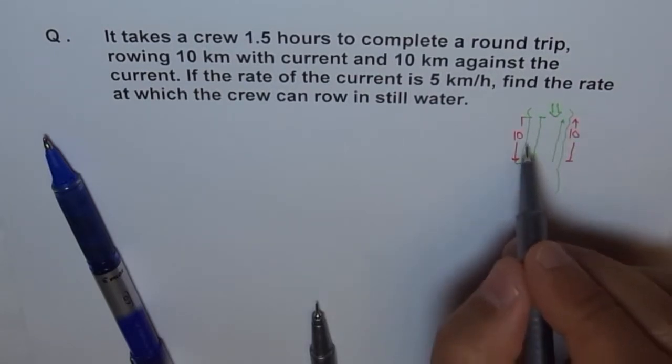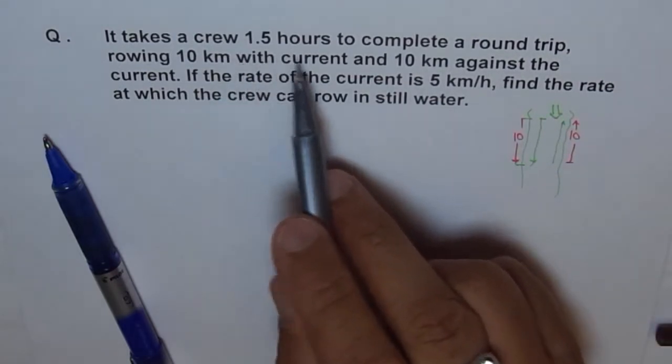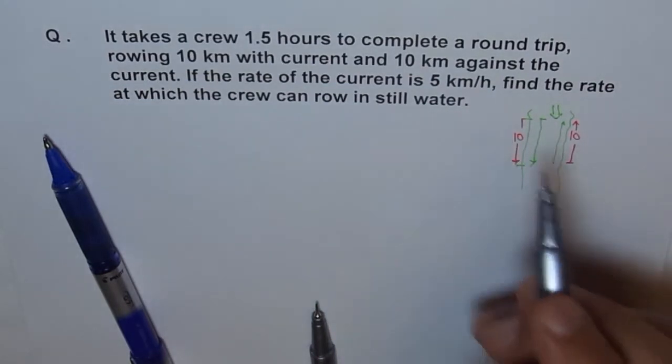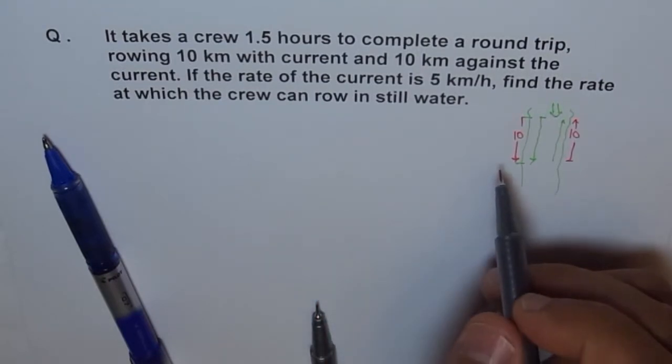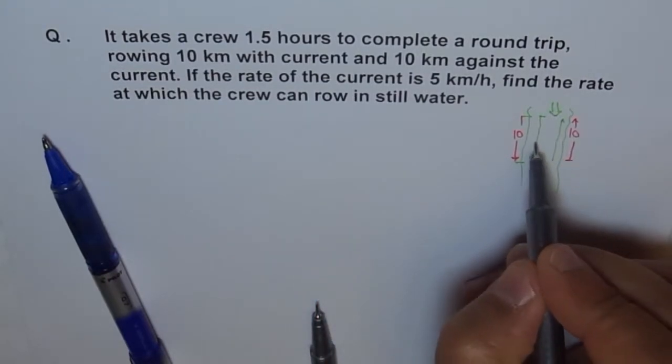So, the total distance covered will be 20, right? And it takes one and a half hour to complete this round trip. And let's assume, for the time being, that the speed of the crew in still water is X. Let's say the speed is X in this water.